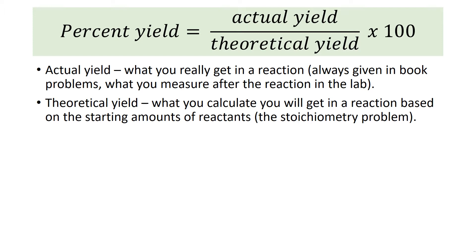Maybe the reaction isn't complete, maybe you can't isolate all the product — you don't always get as much as you predict you will. That's what the actual yield is. The theoretical yield is what you calculate you could get in a reaction based on the starting amounts — theoretical is calculated, actual is given.